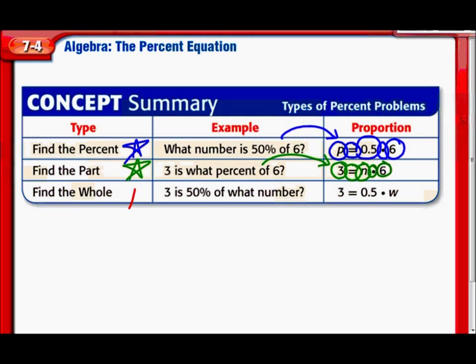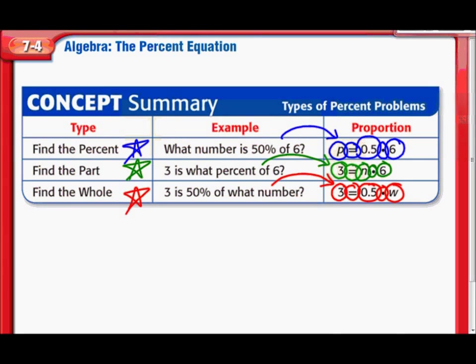And finally, I didn't use red yet. Here we go. What if you needed to find the whole? So now you have 3 is 50% of what number? So that would look something like this. You have the 3 at the beginning again. Is, is is equals, 50%, again, they used 0.5 for that, of, what number? Of is times, and then what number? So you don't know what that number is yet. So that's where they're using, in this case, the variable w. So there's 3 different ways these problems are going to look, depending on if you have to figure out the percent, the part, or the whole.